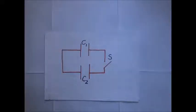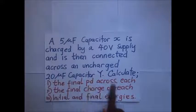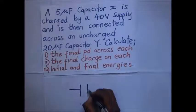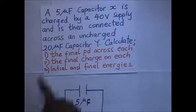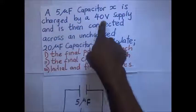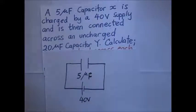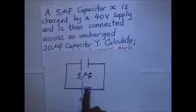We'll look at a worked example. A 5 microfarad capacitor X is charged by a 40 volt supply. It is then connected across an uncharged 20 microfarad capacitor. We are asked to calculate: the final potential difference across each capacitor, the final charge on each, and the initial and final energy.